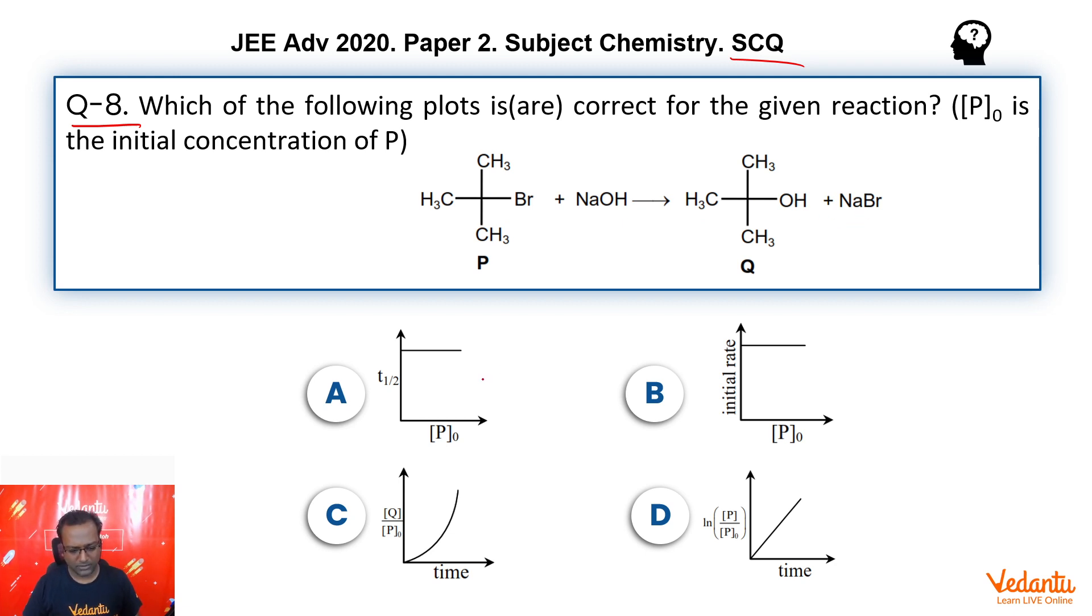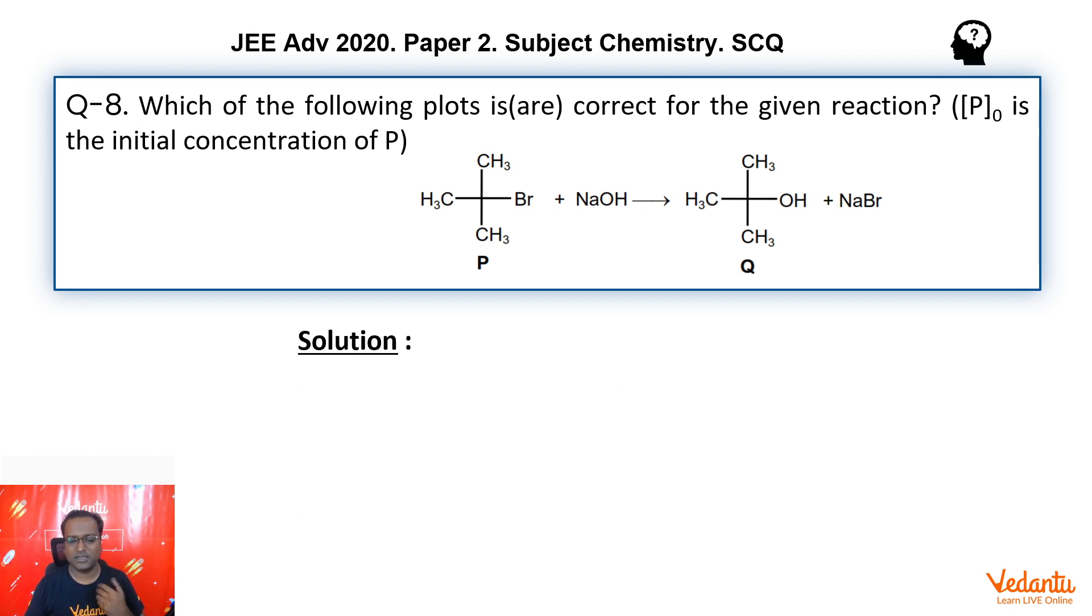And then we are given four options based on T half initial rate, Ln P by P0 and Q by P0. So, it looks like guys, this is a question from chemical kinetics from options. And if you remember to solve any chemical kinetics question, the first and foremost thing that we have to identify is the order of the reaction. So, first let's do that.